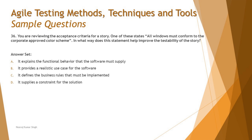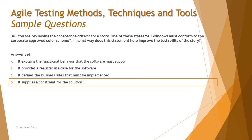Option D says: it supplies a constraint for the solution — yes. The color scheme does not drive functionality or implement a requirement; it is a constraint that the implemented solution must conform to. The correct answer is D — the statement 'all windows must conform to the corporate approved color scheme' supplies a constraint for the solution, not a functional behavior, use case, or business rule.